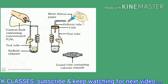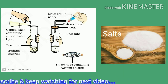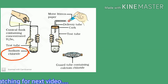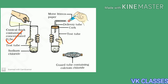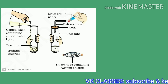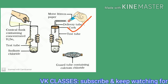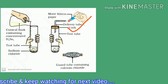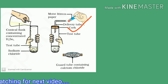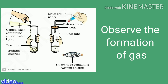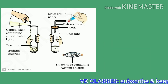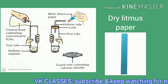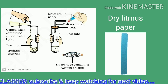Now add some concentrated sulfuric acid to the test tube. Close the mouth of the test tube with a single-hole cork along with a delivery tube. Observe the reaction — is there any gas coming out of the delivery tube? If yes, test the gas with dry blue litmus paper and then with wet blue litmus paper.